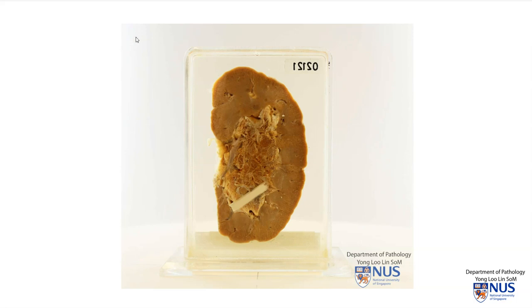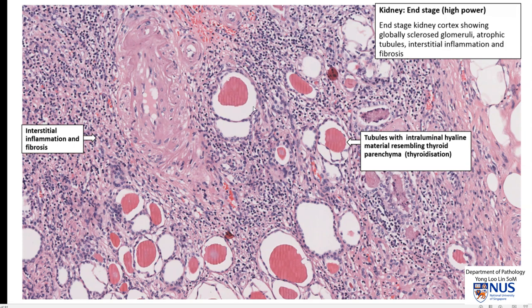Here is an example of chronic pyelonephritis microscopically, and this is also very similar to what we see in end-stage kidney. Chronic pyelonephritis is an important cause of end-stage kidney. We can see that the tubules themselves are very abnormal — they appear quite dilated, filled with proteinaceous material, and the cells lining the tubules are very flattened and atrophic. This actually resembles thyroid parenchyma, so sometimes this is referred to as thyroidization.